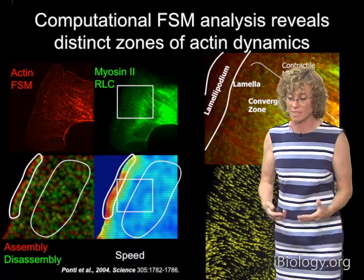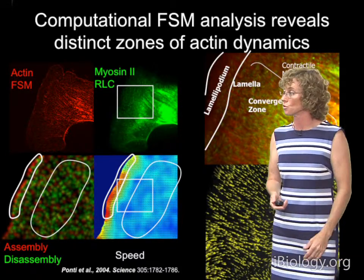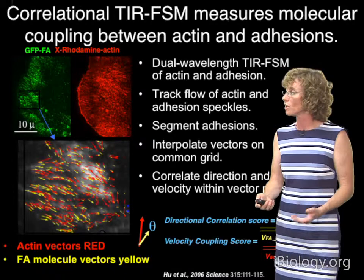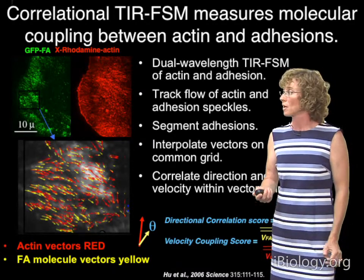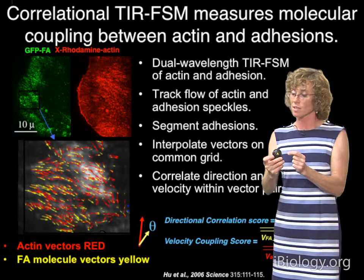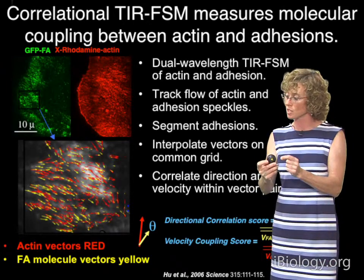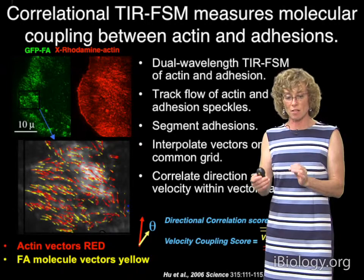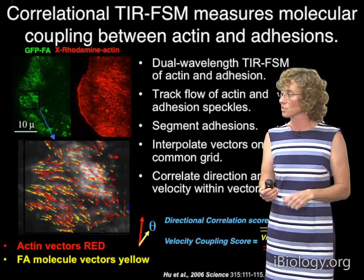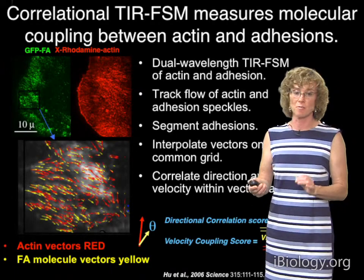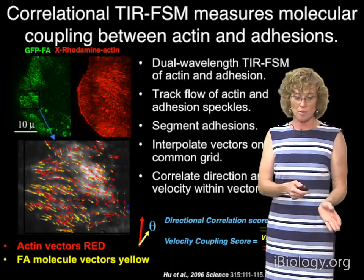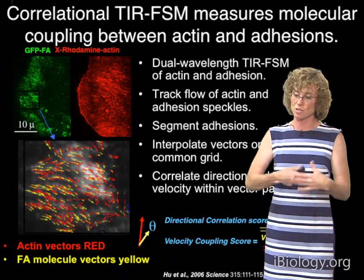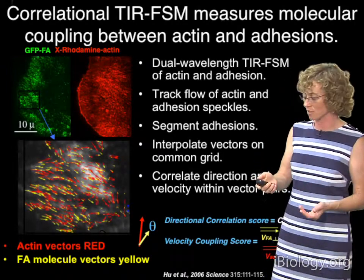This is typical of migrating cells of various types from various tissues, so it represents fundamental machines of migration that the actin cytoskeleton builds. In addition, we developed what we call correlational speckle microscopy, where we correlate the motion of speckles in two different channels — a sort of cheap version of fluorescence correlation spectroscopy for molecules moving much more slowly than diffusion. We correlated the motion dynamics of focal adhesion proteins with the movement of the actin cytoskeleton to understand how actin is coupled to the adhesions to generate force on the extracellular matrix and drive migration.